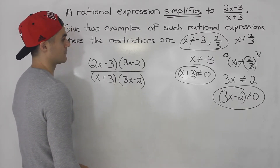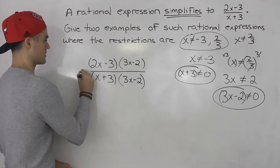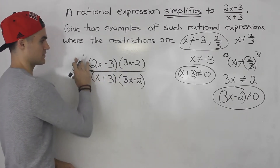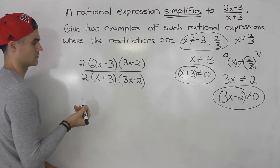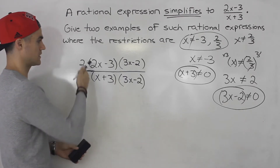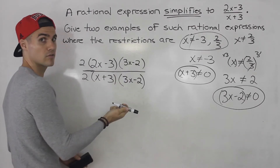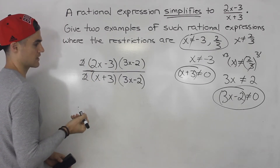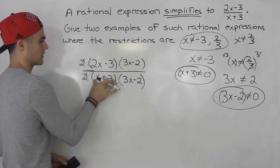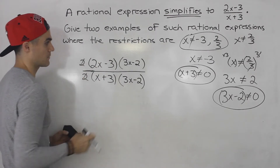They say give two examples of such rational expressions. Another example: we could put a 2 in front of both factors — so a 2 in the numerator and a 2 in the denominator. It's a different rational expression because the numerator and denominator will be different when expanded, but ultimately those 2s cancel out. You could really put any number here and give as many examples as you want.